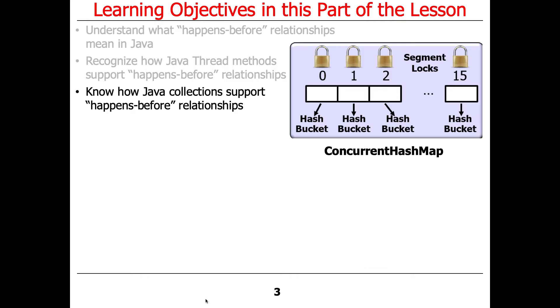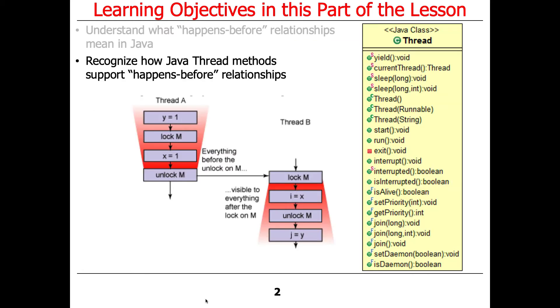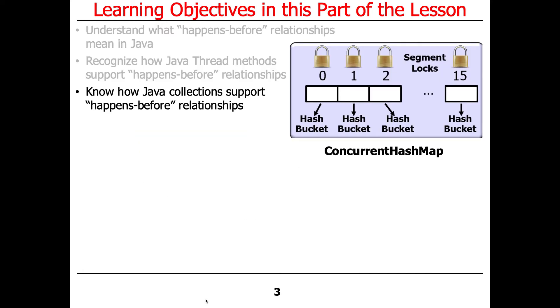We'll focus on some examples in the context of Java thread methods as well as collection methods, so you can see happens-before relates to multiple things.